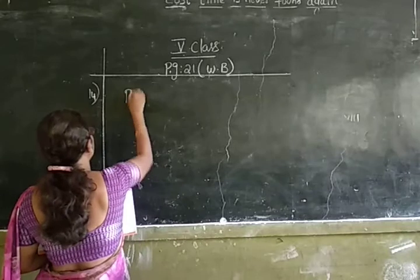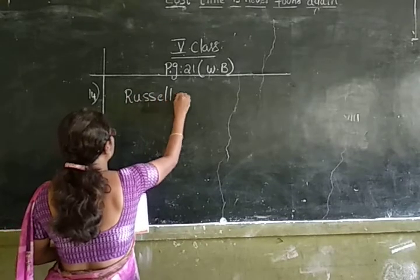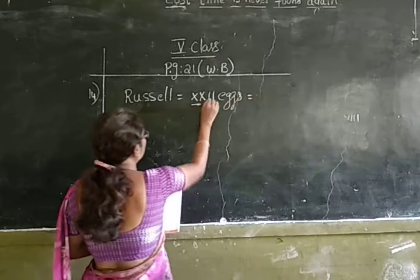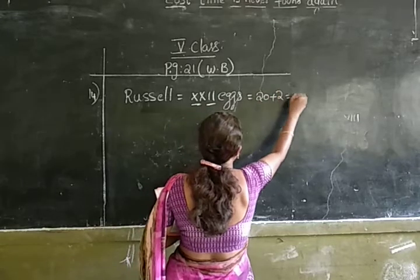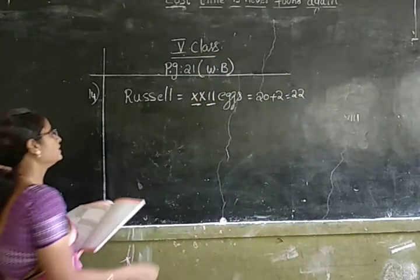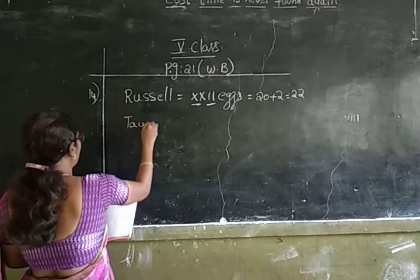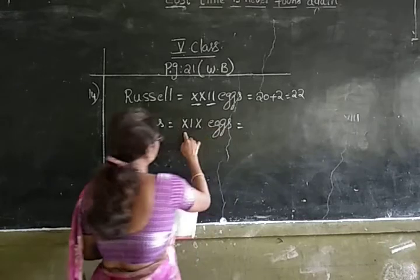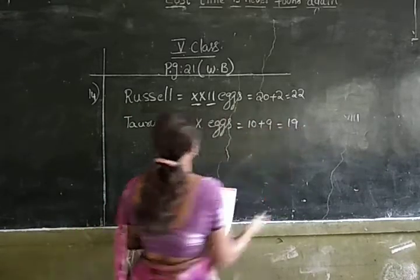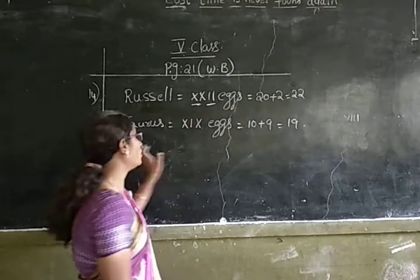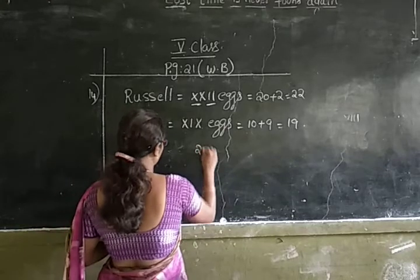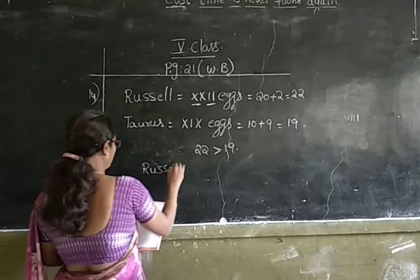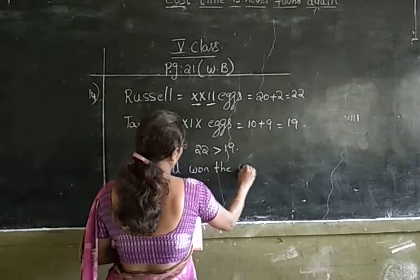Russell bought XXII. X, X means 20 and I, I means 2, which means 22. So Russell bought 22 items. Taurus bought XIX: X means 10 and IX means 9, which means 19. So Russell bought 22 items and Taurus bought 19 items. Since 22 is greater than 19, Russell won the contest.